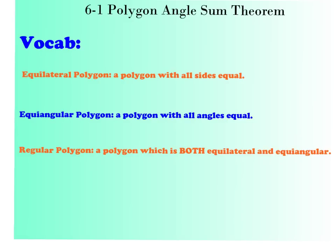Before we get started, we need to know a little vocabulary. We have three words. First, an equilateral polygon is a polygon with all sides equal. Second, an equiangular polygon is a polygon with all angles equal. And our last word is regular polygon — a regular polygon is one which is both equilateral and equiangular.